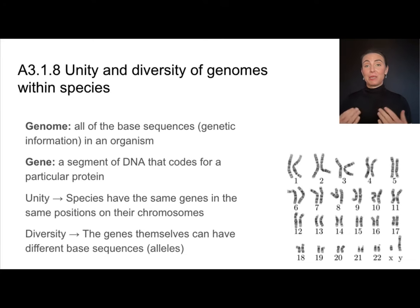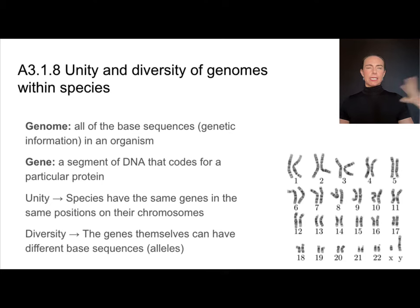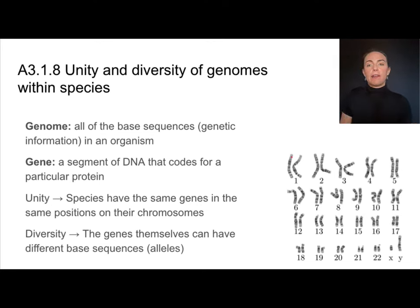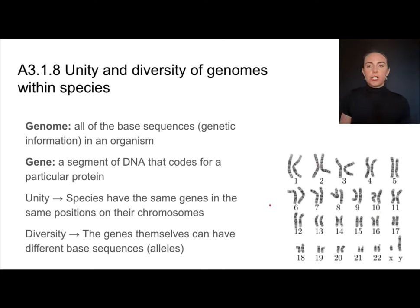Before we get into how this plays into unity and diversity, let's define a couple of terms. When we say genome, we mean all of the base sequences — the A's, T's, G's, and C's from DNA — all of that genetic information of an organism. A gene is just a segment of DNA that codes for a particular protein. So on one chromosome you might have a gene for blood type, and on another chromosome you might have a gene for skin color.